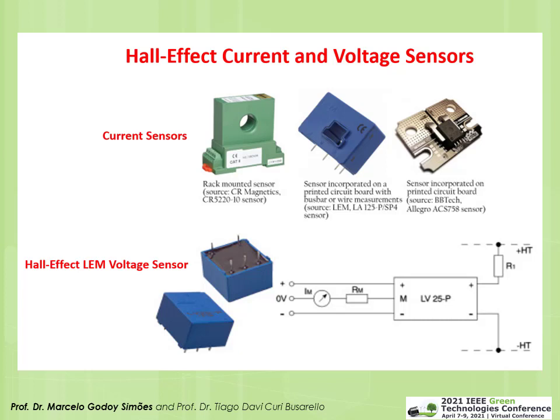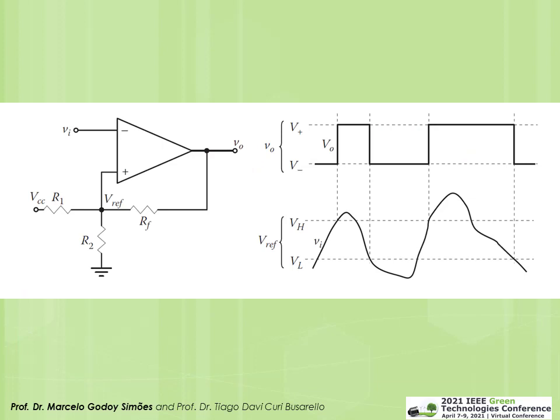LEM Hall effect sensors are widely used. The current sensor (on top) allows a wire to pass through a hole, or it can be embedded on a PCB. The LEM voltage sensor, model LV25-P, has a resistor in series; from terminals +HT and −HT (high voltage), and across Rm to ground, you get a voltage proportional to the high voltage that is galvanically isolated from the high-voltage terminals — very typical in motor drives and grid-connected inverters.